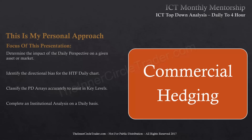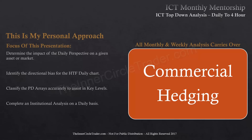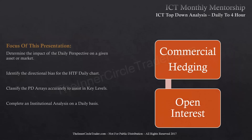I start my perspective from the daily timeframe, zoning in on what the commercial traders — the large commercial hedgers — are doing. I create my own zero line by getting the 12-month high and low of their net positions, then divide that range in half. Above the midpoint is bullish and below it is bearish. All monthly and weekly analysis is carried over into the daily timeframe — that's what lends us a bullish or bearish bias. The daily should confirm it.